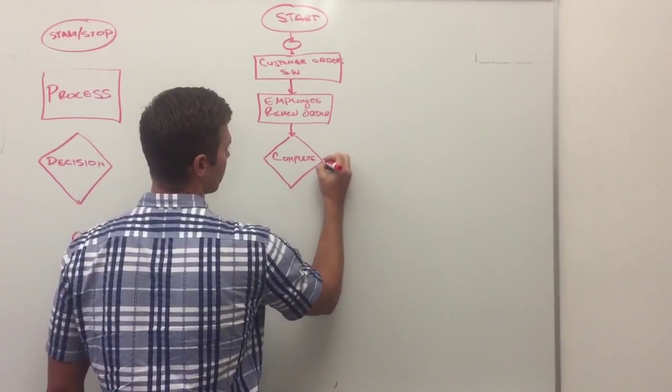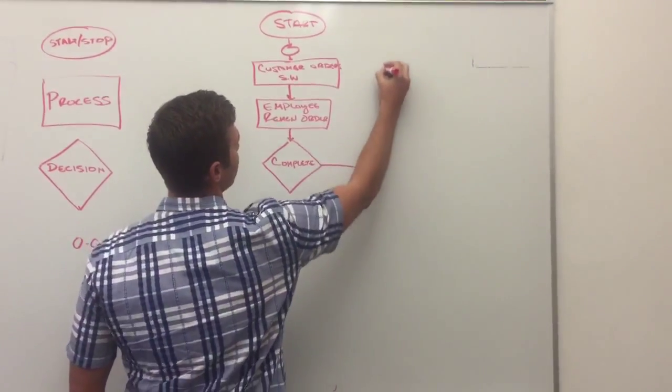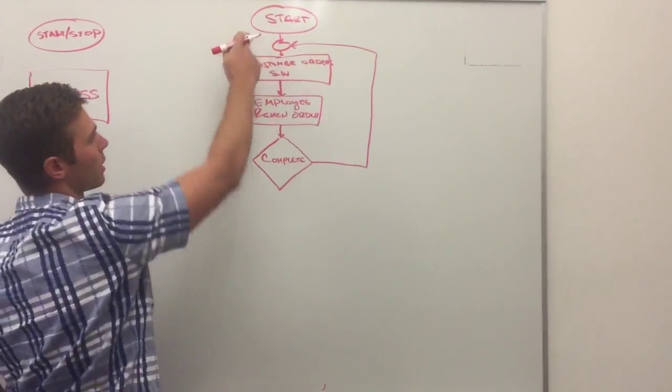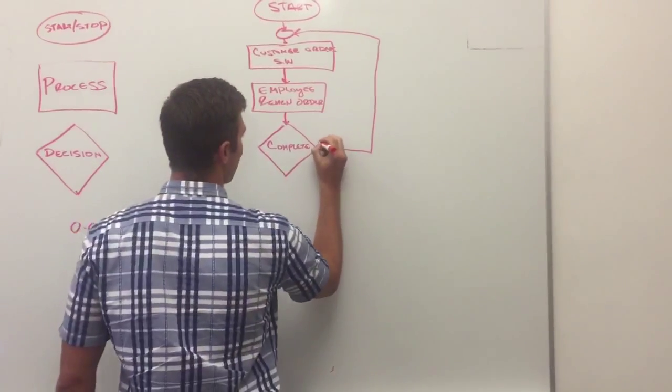If the order is not complete, we can draw it over here that goes back, and that's where we break in the connector. And that basically is just saying that it's going to go back through this order. So this is no.